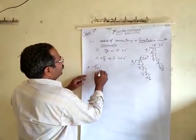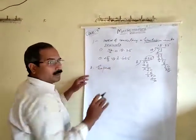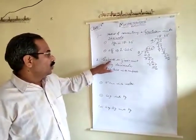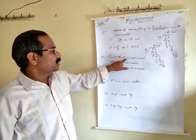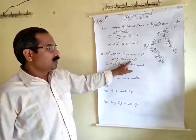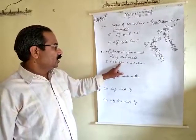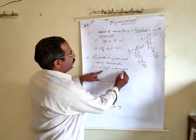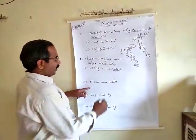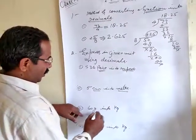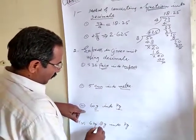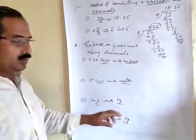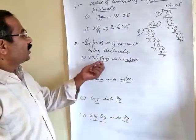Now I want to give you another question: express in a given unit using decimals. Students, you have to express in the given unit using decimals. You are given 536 paise and have to change it into rupees. Another question is centimeter into meter, another is gram into kilogram, and one more where both kilogram and gram are given and you have to change into kilogram. First of all, you should know the conversion facts.